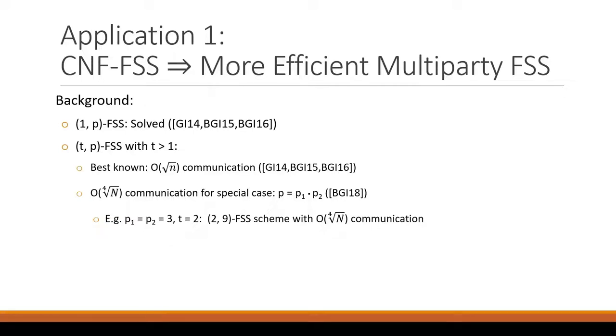The case for P is more than two parties, and the threshold is bigger than one, has proven to be more elusive. So the original papers show square root N communication for the GEN protocol. And a later work improved this to the fourth root of N for certain parameters. For example, if the number of players is a product of two smaller values, for example P1 equals P2 equals 3, and the threshold is 2, then they showed how you could construct a threshold 2, nine-party FSS scheme with fourth root of N communication.